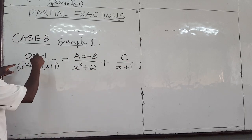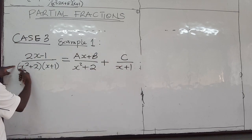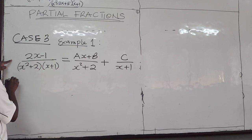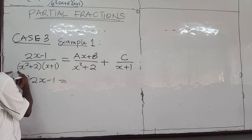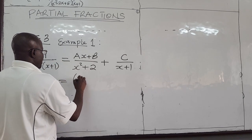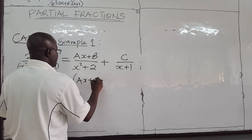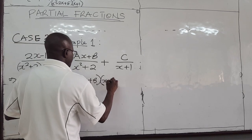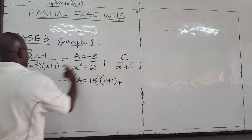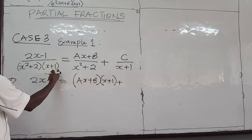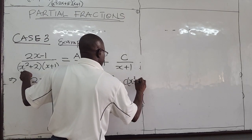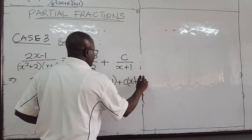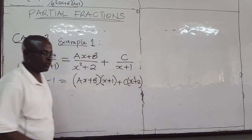Let's do that as usual. Multiply each of these fractions by the common denominator. If I multiply all of these by the denominator, it cancels. So I have 2x minus 1 equal to — if I multiply by this, this will cancel out. So I'm left with ax plus b multiplied by x plus 1. And when you multiply the other term by the full denominator, x plus 1 cancels out and you're left with x squared plus 2. So you have c times x squared plus 2.